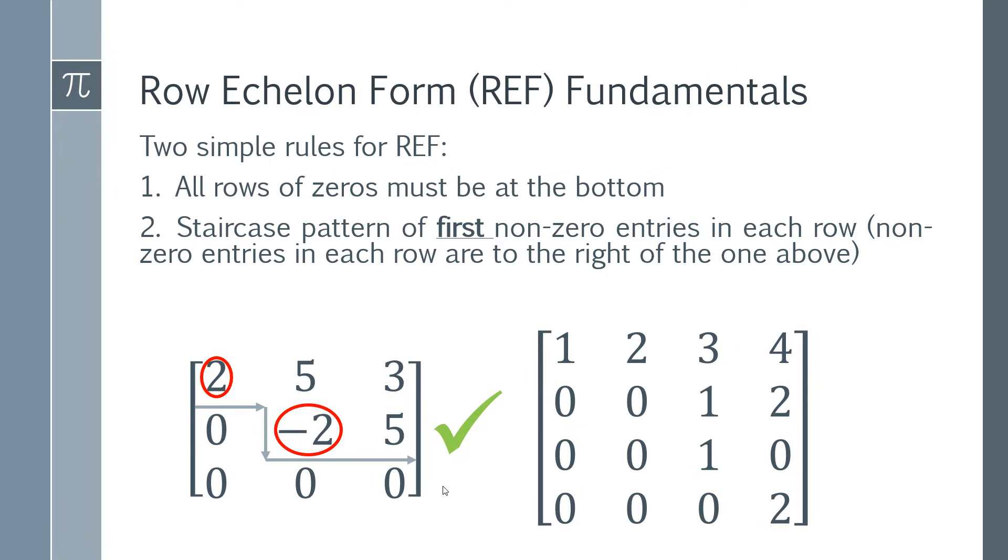This one, however, is not in row echelon form. We've got the first entries which look okay, but then we've got one immediately below. This is not to the right of the one above, so that is not satisfying the condition. And then we've got the last one there. When we draw on the staircase pattern, you're getting this big drop here, so this isn't showing that nice staircase pattern.